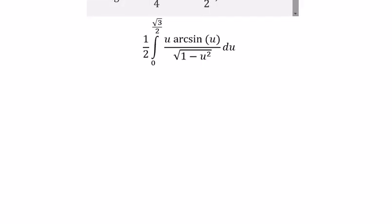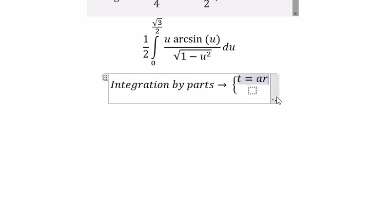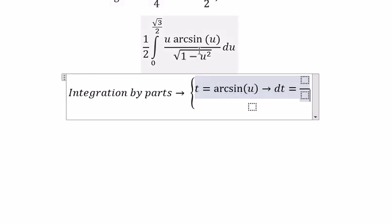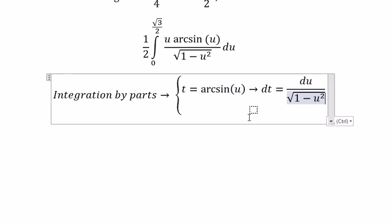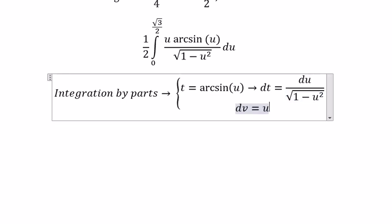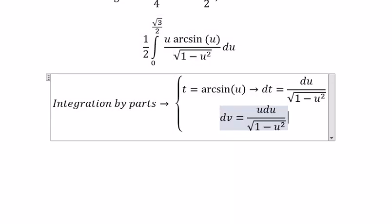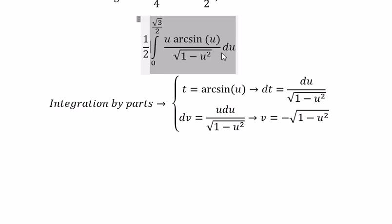Next, we need to use integration by parts. So we have t and dv. t equals to arcsin of u, so we get dt equals to 1 over the square root of this one, which is u over this one. dv we get about u over the square root of this one. dv equals to the antiderivative of u over this one. So we put everything in here.